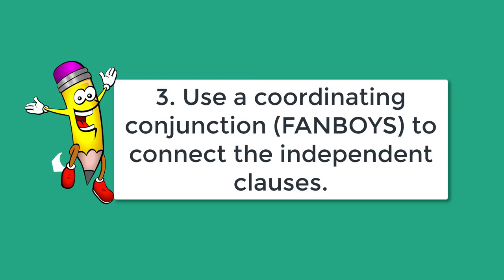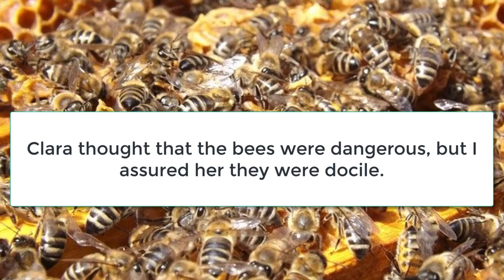The third way to correct the comma splice is by using a coordinating conjunction — you can use one of the FANBOYS. Clara thought that the bees were dangerous, but I assured her they were docile. In this example, we connected the two independent clauses with a coordinating conjunction, 'but.' We followed the punctuation rule for coordinating conjunctions when they connect two independent clauses: place a comma before the conjunction.